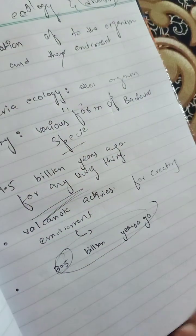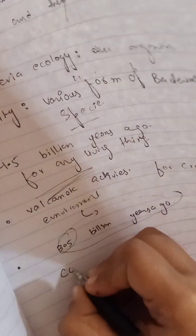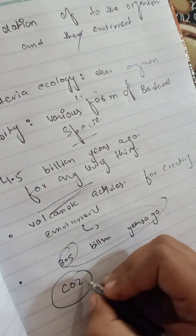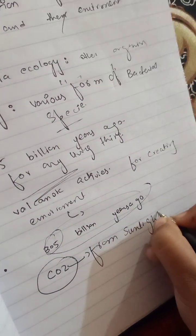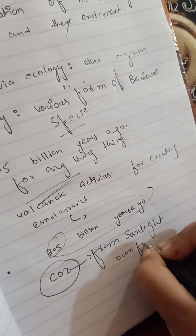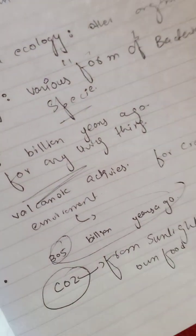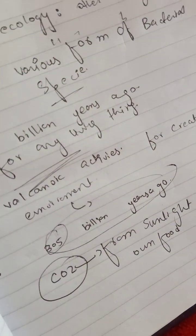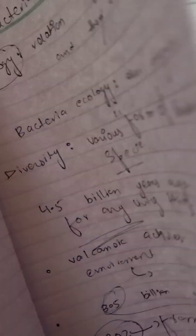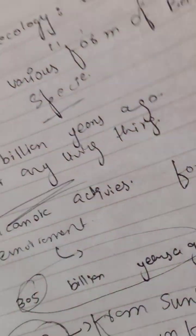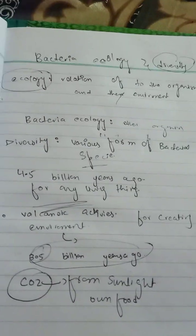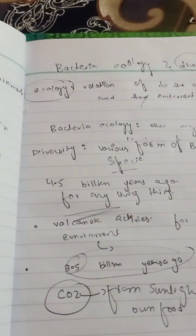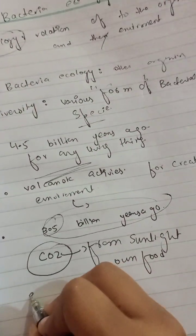When life first evolved 3.5 billion years ago, bacteria used carbon dioxide and sunlight to make their own food. Bacteria also have many different habitats for living. As prokaryotes, they are able to inhabit many different places.